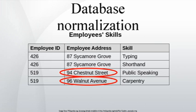Edgar F. Codd, the inventor of the relational model, introduced the concept of normalization and what we now know as the first normal form (1NF) in 1970. Codd went on to define the second normal form (2NF) and third normal form (3NF) in 1971, and Codd and Raymond F. Boyce defined the Boyce-Codd normal form (BCNF) in 1974.